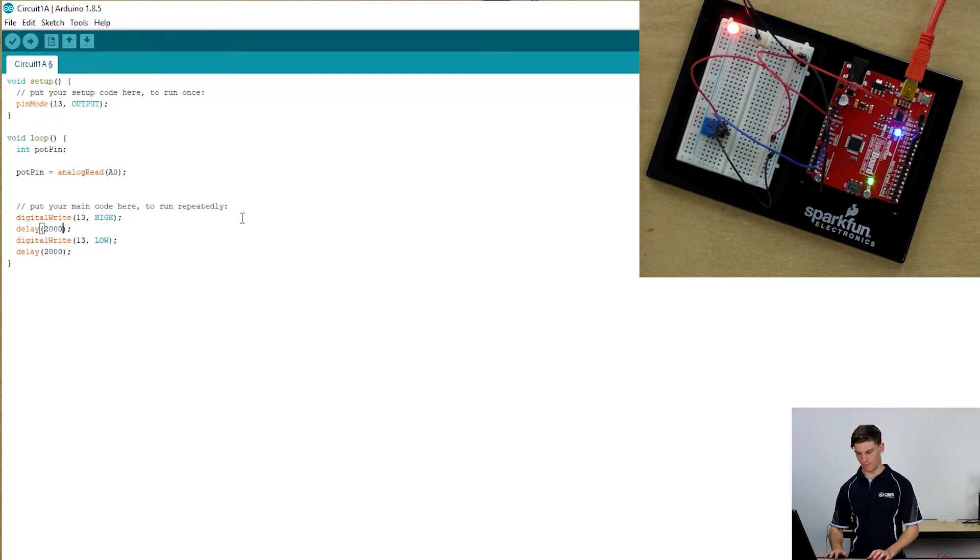Then in our delay that we've written before, we're going to write pot pin and pot pin. What this means is that the value stored in pot pin that's just been read will now be the value that's used in the delay.